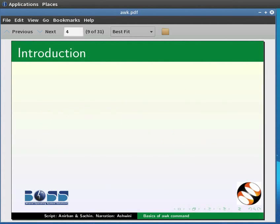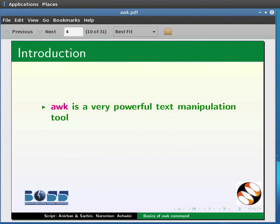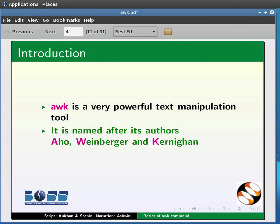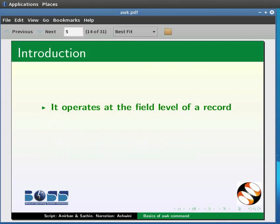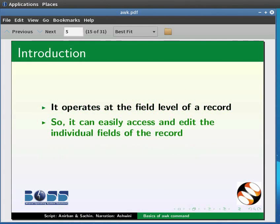Let us start with an introduction to AWK. The AWK command is a very powerful text manipulation tool. It is named after its authors Aho, Weinberger and Kernighan. It can perform several functions. It operates at the field level of a record, so it can easily access and edit individual fields of the record. Let us see some examples.